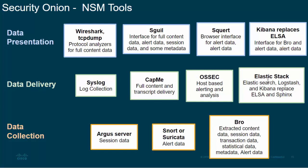In Security Onion, the Elastic Stack replaces ELSA and Sphinx. At the presentation level, tools include Wireshark, TCP Dump at the command line, Squeal — an interface for full content data, alert data, session data, and some metadata — Squert, which has a web browser-based interface for alert data from Snort, and Kibana, which serves as an interface for Bro alert data and related information.